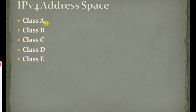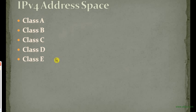The first three classes — Class A, Class B, and Class C — are unicast classes. Class D is used for multicasting, and Class E is an experimental class. So if you want to use an IP address in Class E, you should be a member of the experimental group.